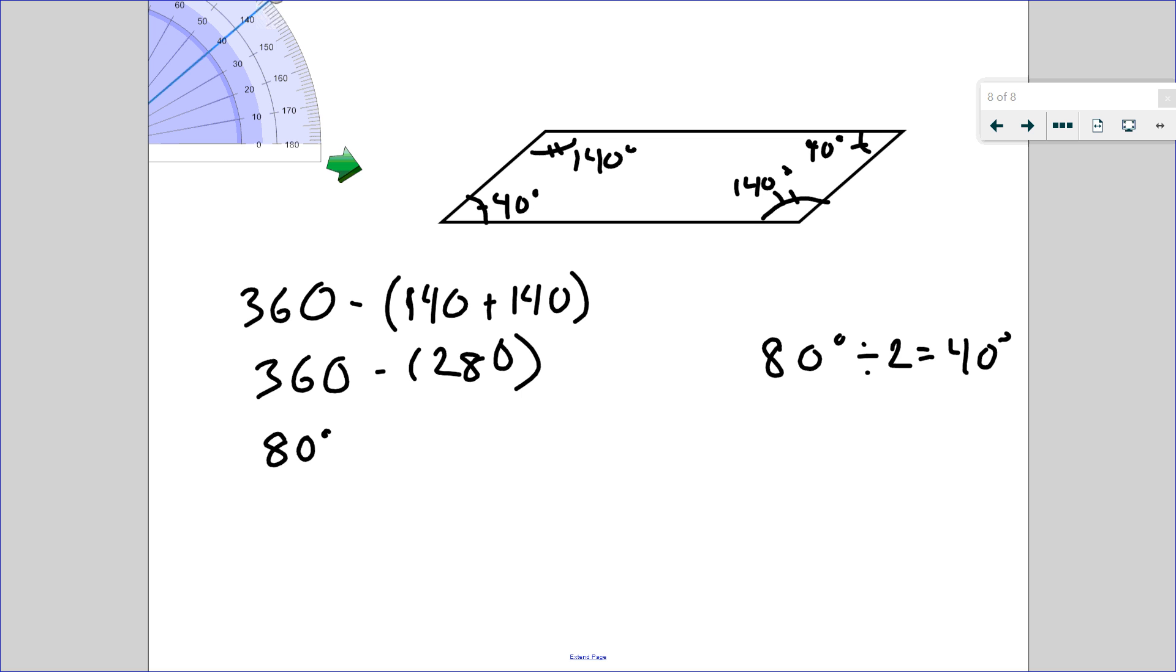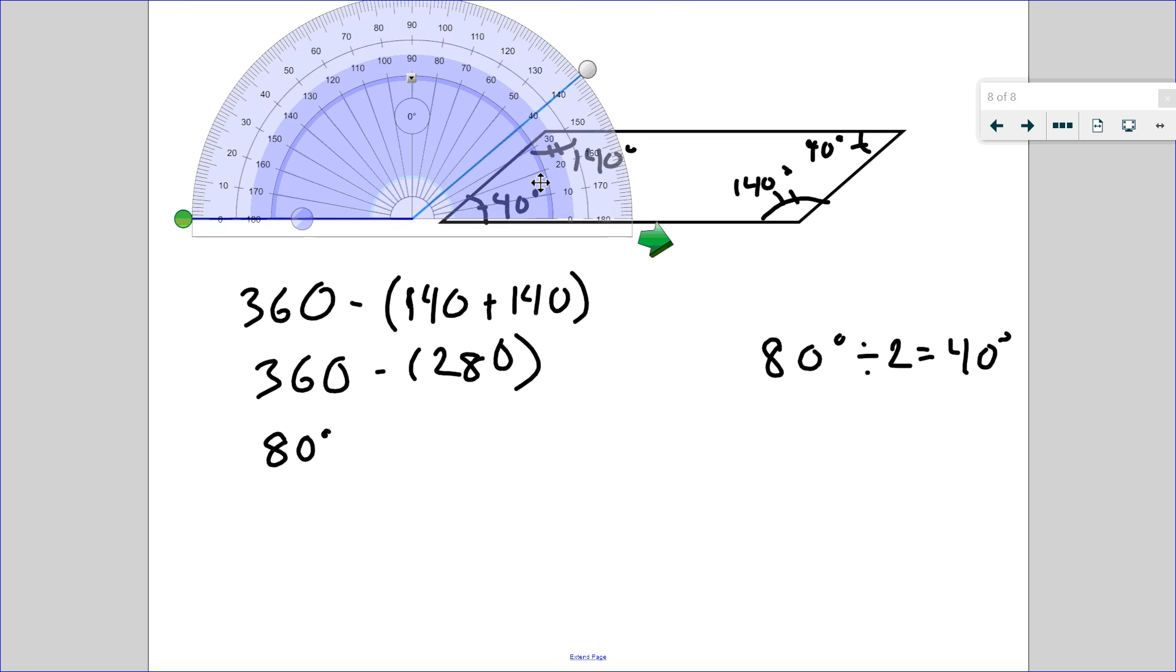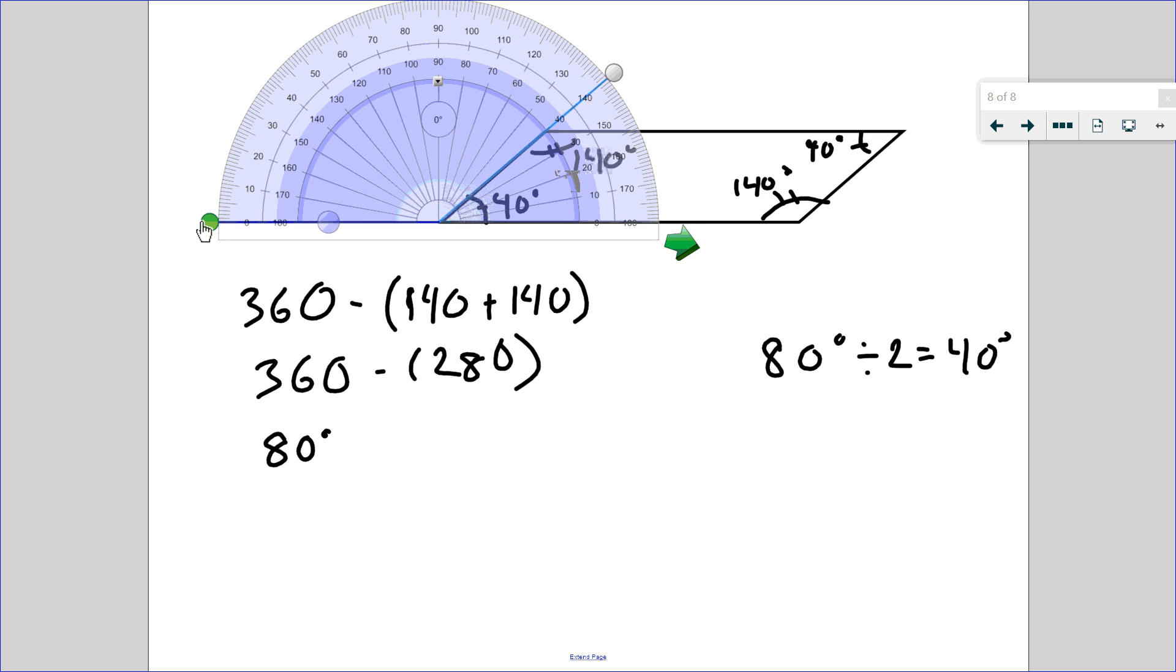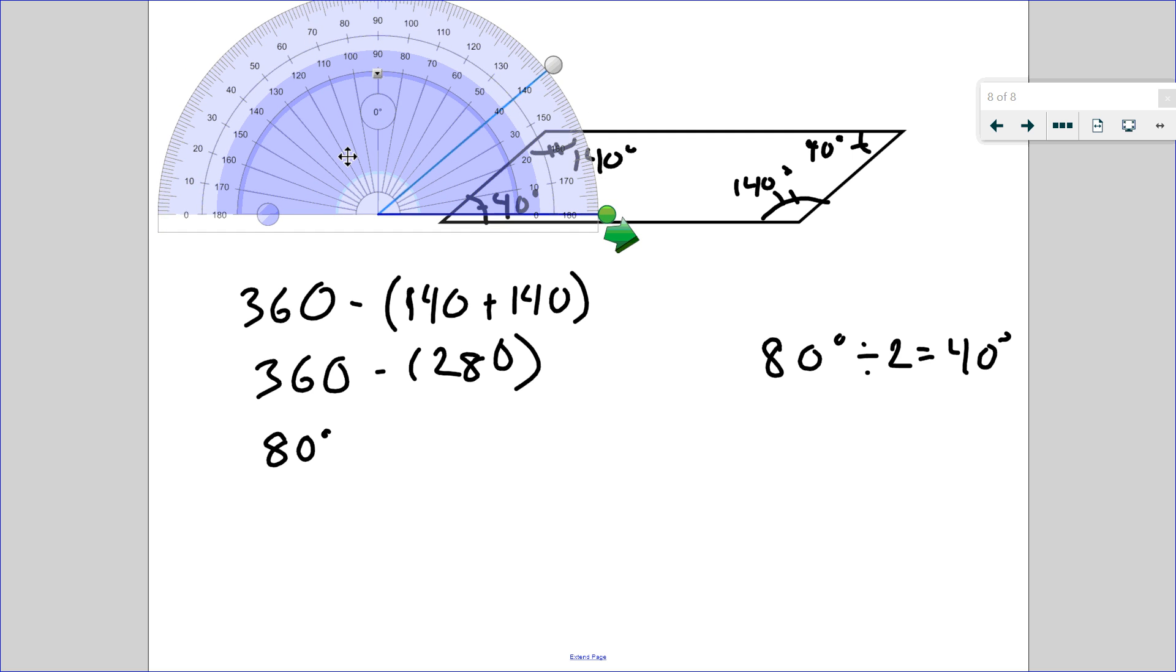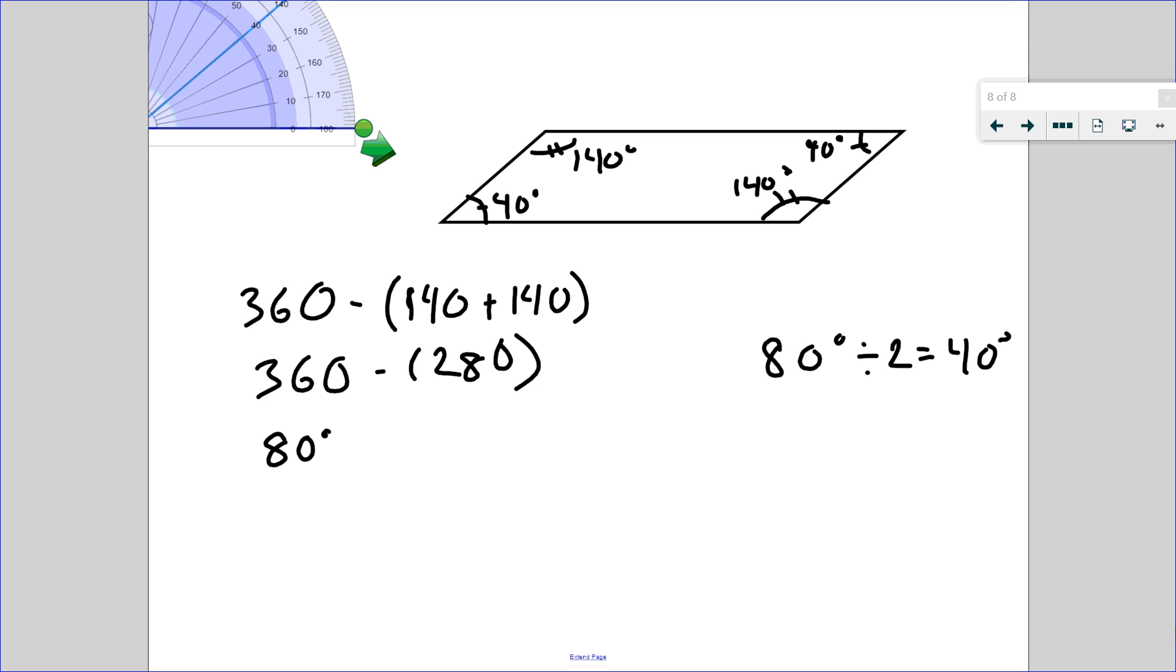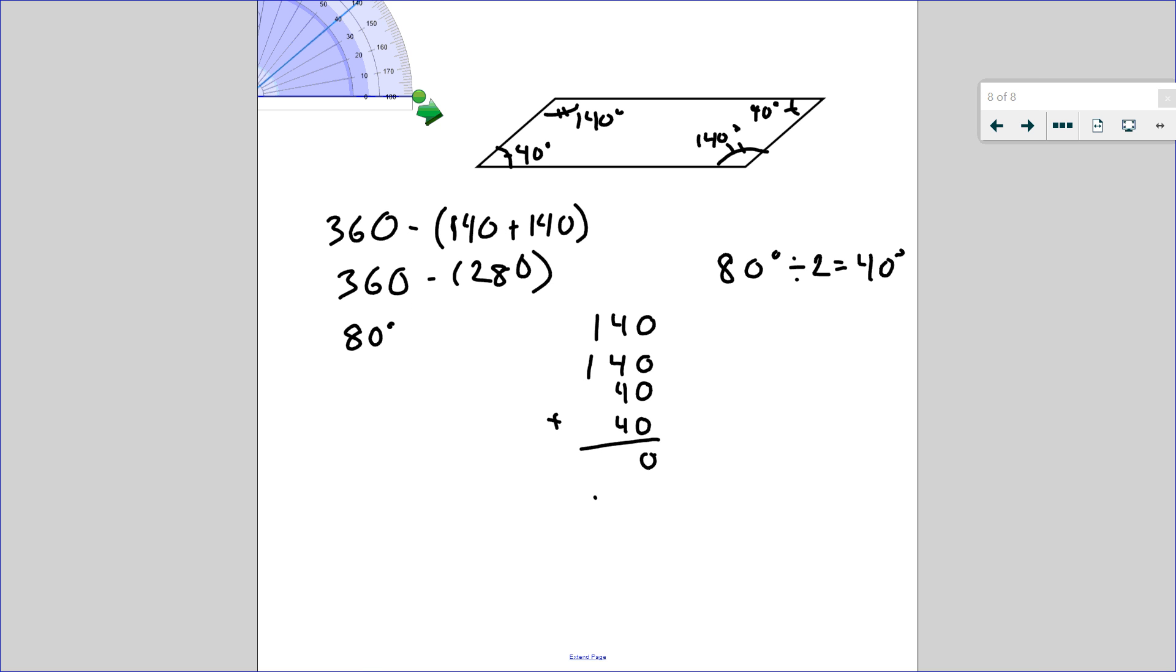You can double-check that. Line up the protractor here. Oh look, 40 degrees. Starting from the inside zero, I get to the inside 40. This all checks out. And if I wanted to, I could add them up again just to make sure. 40 plus 40 plus 140 plus 140. 140, 140, 40. Four fours is 16, carry the one. Oh look, 360 degrees. Nailed it.